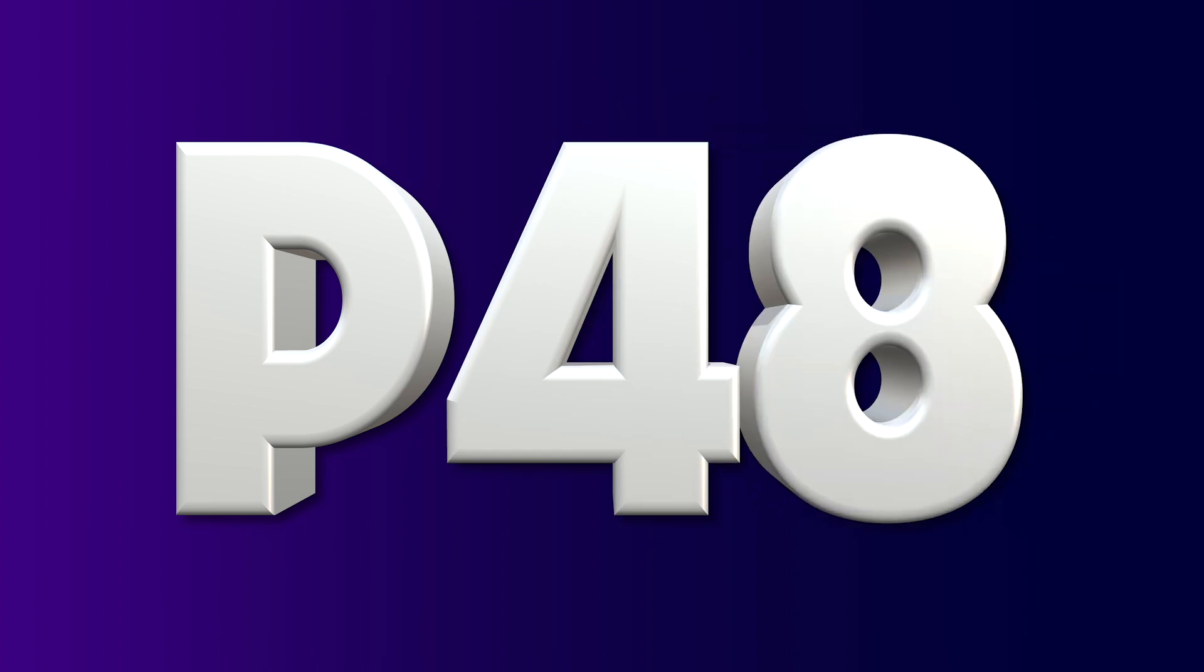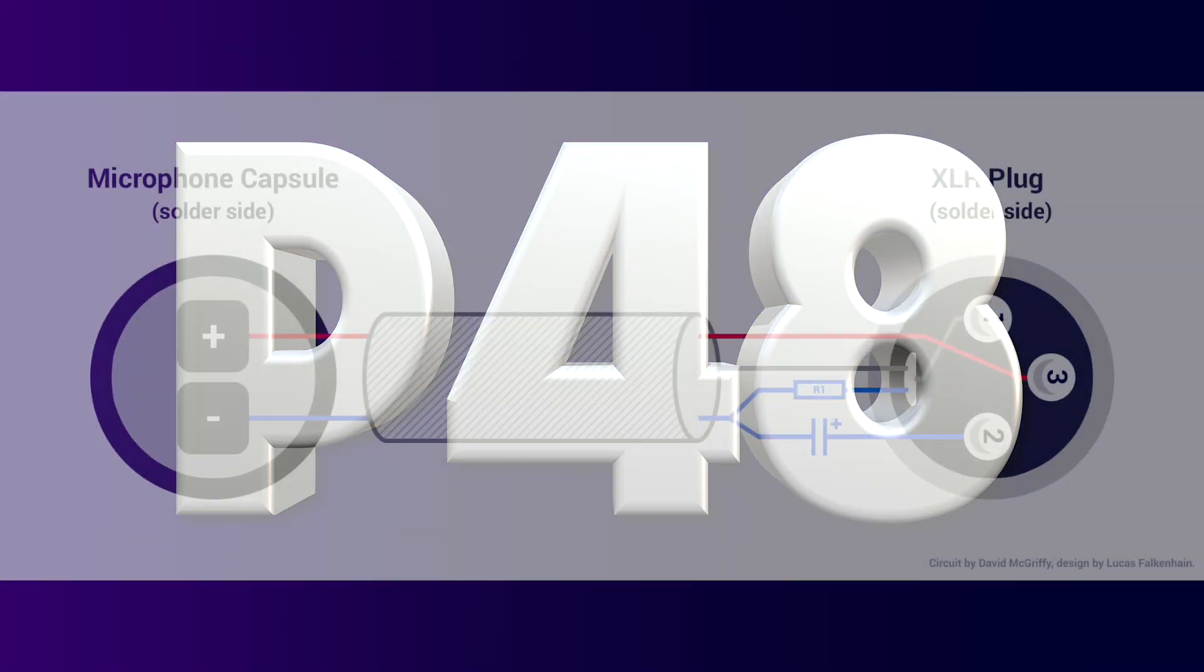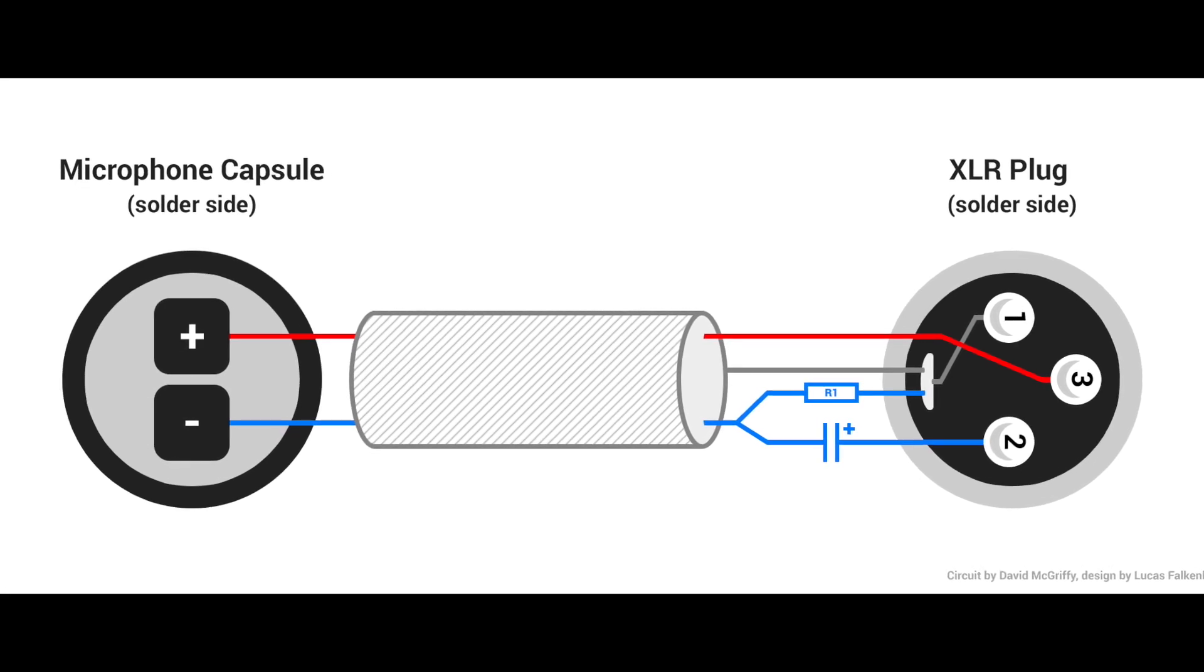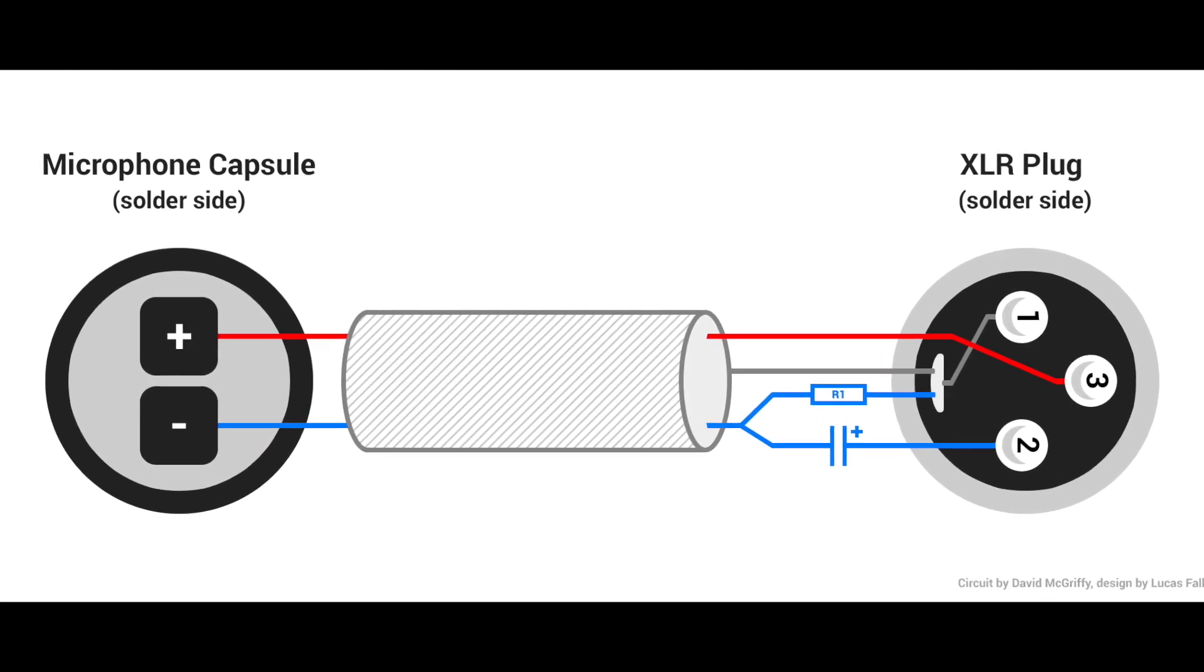Alright, the hard part's done. If you want to connect the mic capsule to an XLR input instead of an eighth inch jack, you need the P48 version. This build uses the fantastic and simple P48 circuit.